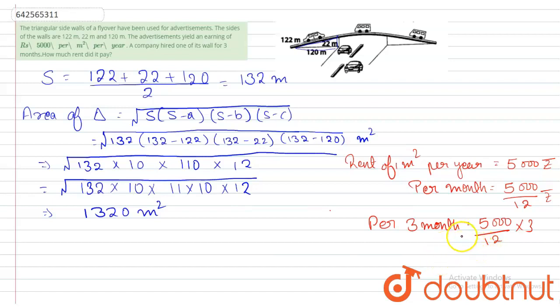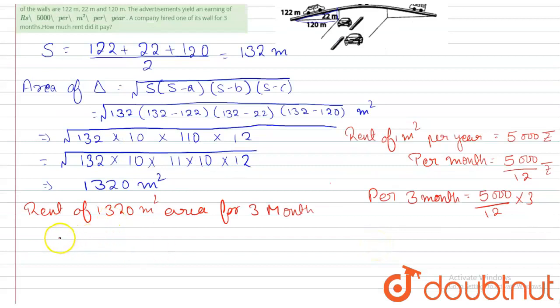And the rent of 1320 meter square area for 3 months, this will be rupees 5000 divided by 12 multiplied by 3 multiplied by 1320, right? And this will